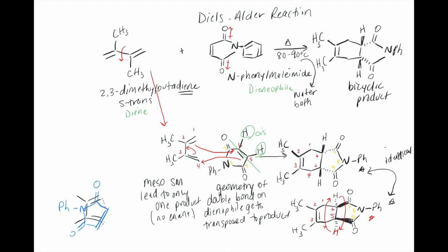So this is the Diels-Alder reaction. This first line here is our main chemical reaction where we have 2,3-dimethylbutadiene and phenylmaleimide reacting between 80 and 90 degrees to form this bicyclic product. Now the diene is shown in the S-trans conformation.